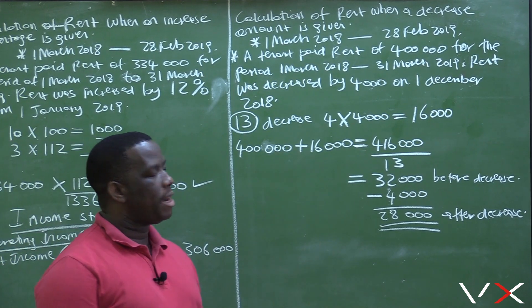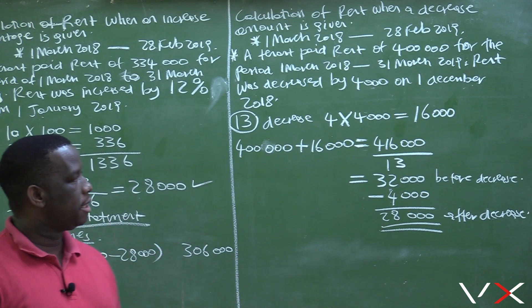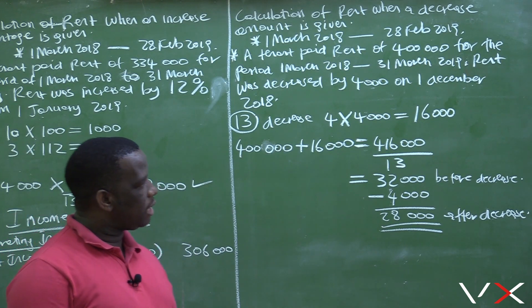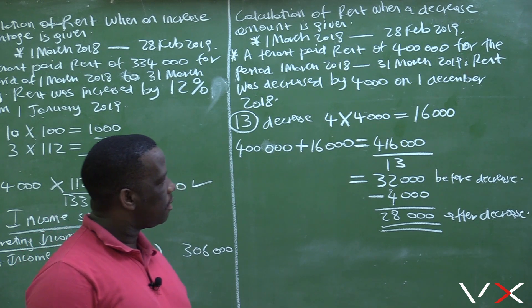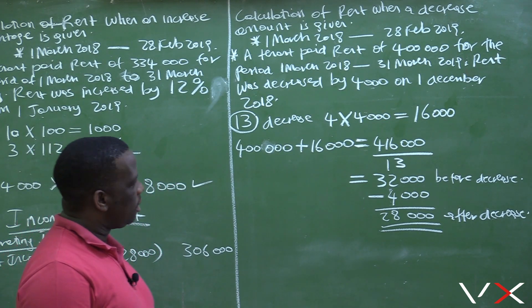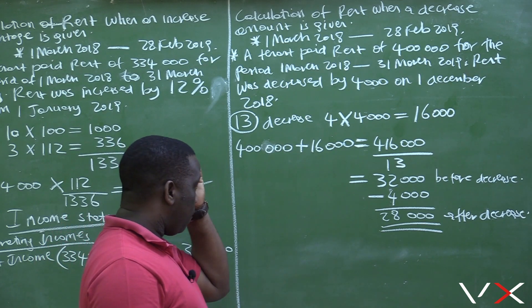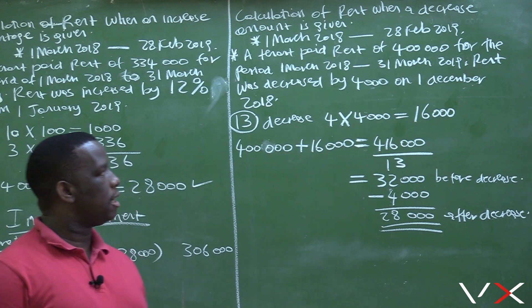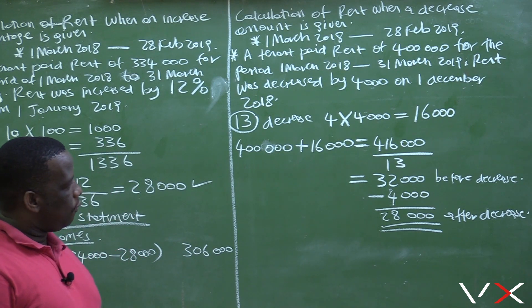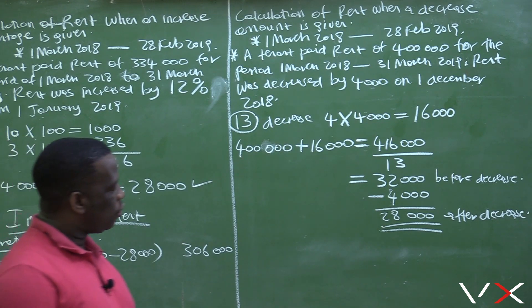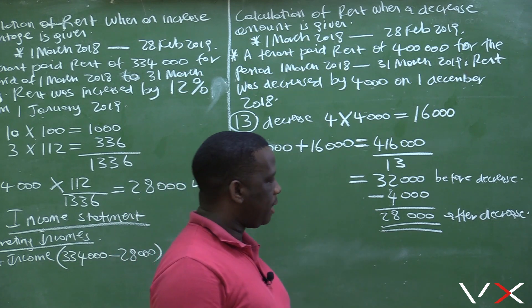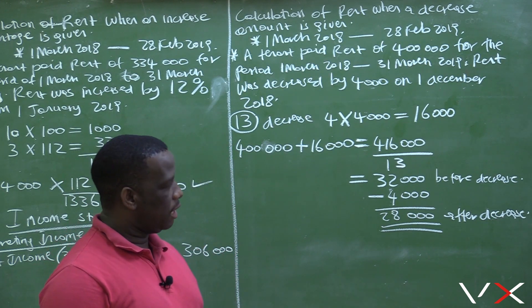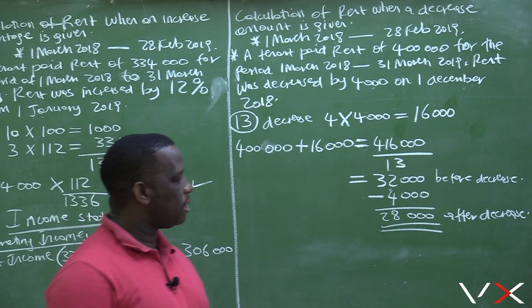So the first thing you need to do when rent has decreased is calculate the number of months for the decrease — in this case, four months. Multiply four months by four thousand, so the total decrease is sixteen thousand. Add back the sixteen thousand: four hundred thousand plus sixteen thousand equals four hundred and sixteen thousand. Divide by 13 to get rent before decrease, which is thirty two thousand. Subtract the four thousand decrease, and rent after decrease is twenty eight thousand per month.